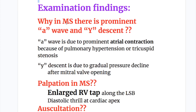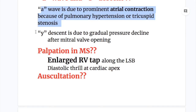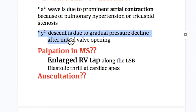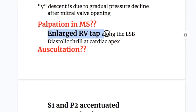Examination findings in mitral stenosis: Why is there a prominent A-wave and Y-descent in mitral stenosis? The A-wave is due to prominent atrial contraction because of pulmonary hypertension or tricuspid stenosis. The Y-descent is due to gradual pressure decline after the mitral valve opens. Palpatory findings include an enlarged right ventricular tap along the left sternal border and a diastolic thrill at the cardiac apex.